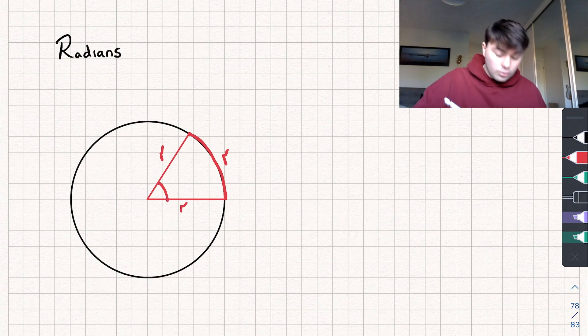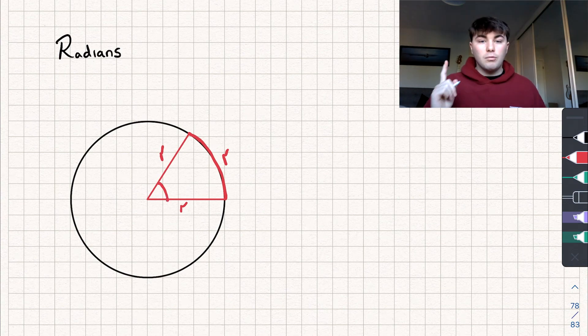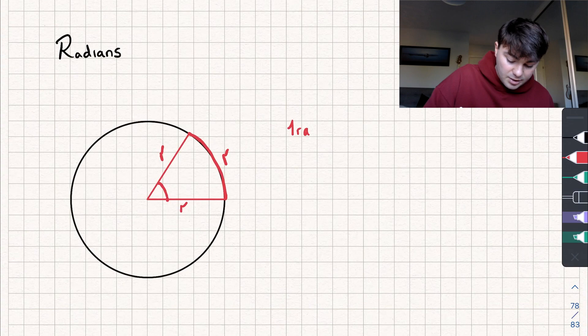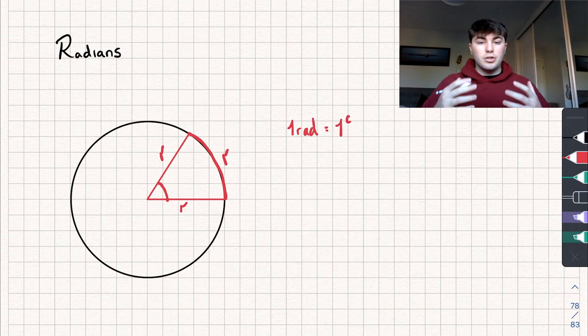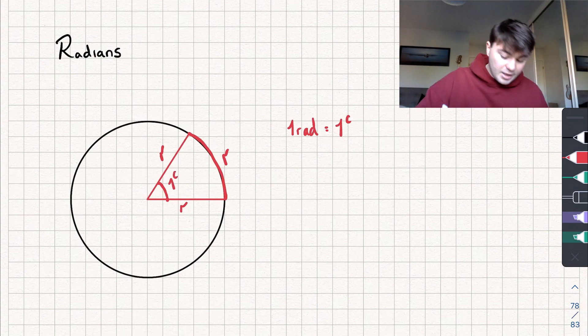We say that this angle that we've created, that is one radian. We could write that as 1 rad or we could say it's 1 with a little c. This is one radian.